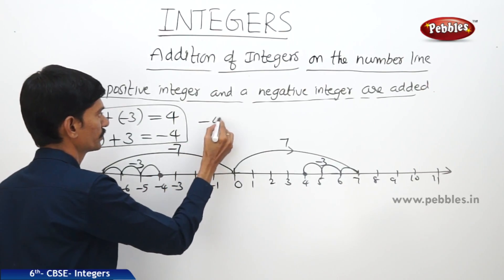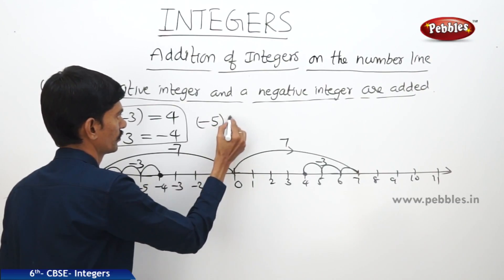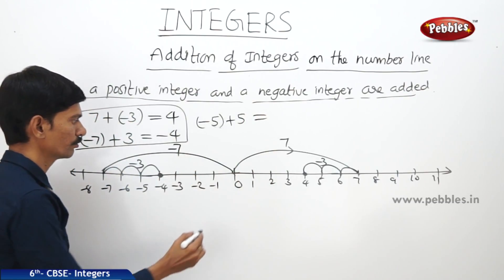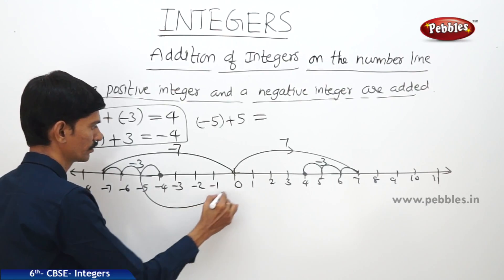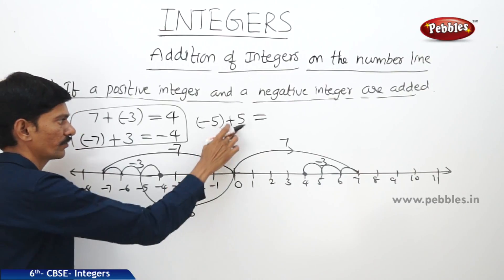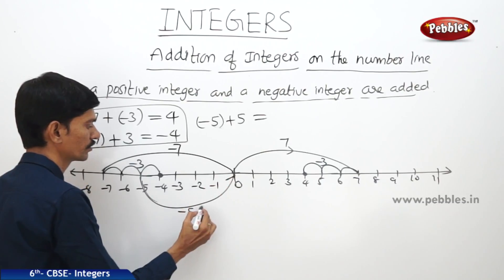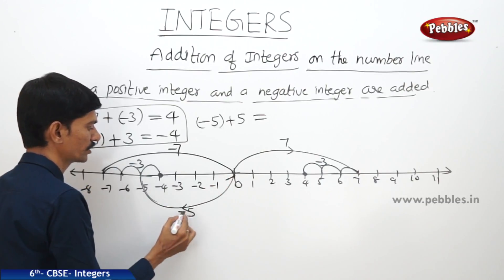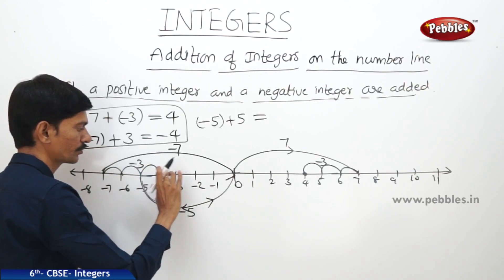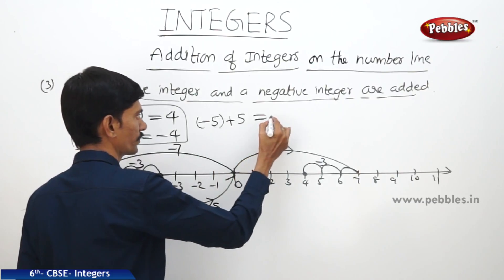Now if (−5) + 5 are added: first, minus 5 means from 0 we have to move to the left to minus 5. Then 5 means we have to move to the right 5 steps, and then again we reach at 0. So moving 5 steps to the right from minus 5 brings us back to 0. Therefore, (−5) + 5 = 0.